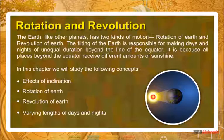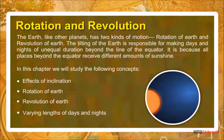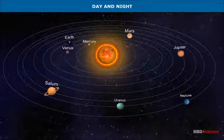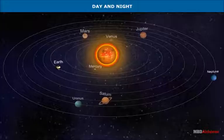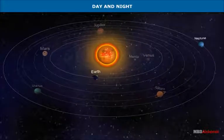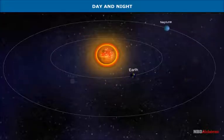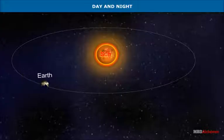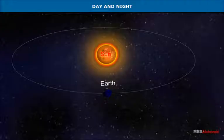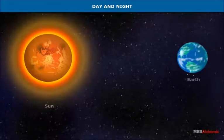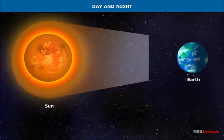In this chapter we will study the following concepts: effects of inclination, rotation of Earth, revolution of Earth, and varying lengths of days and nights. Day and Night: The part of the Earth that faces the Sun is lighted. Being spherical in shape, the Earth completes one rotation in 24 hours and moves from west to east. Therefore, no place on Earth receives sunlight constantly.